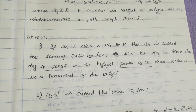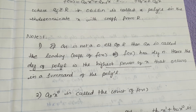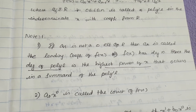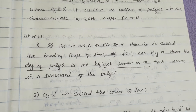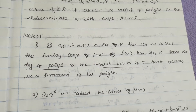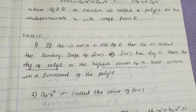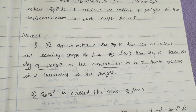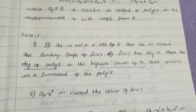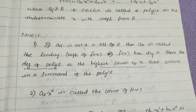The next point is that a_0 x^0 is called the constant of f(x). Here x^0 is equal to 1, so a_0 x^0 simplifies to just a_0, which is the constant term of f(x).